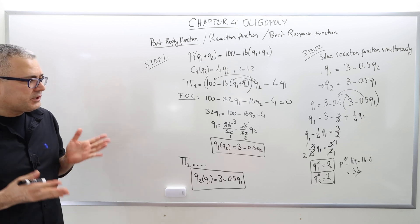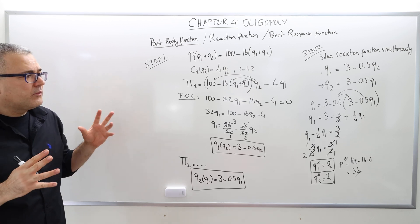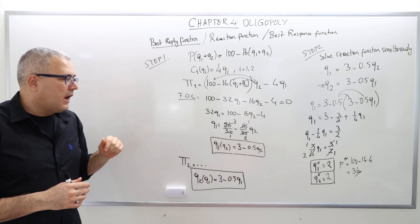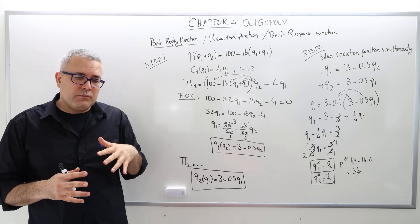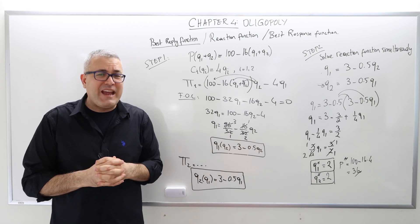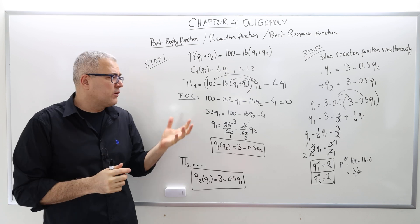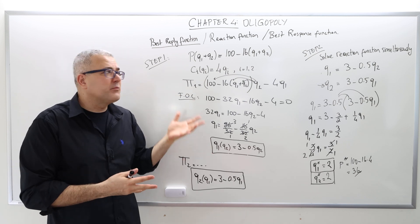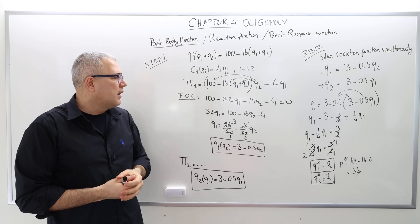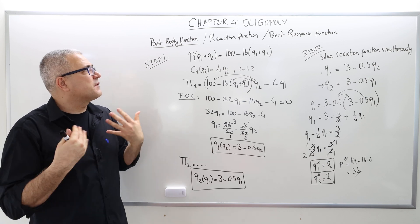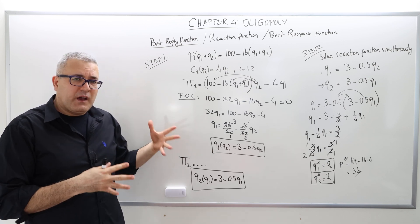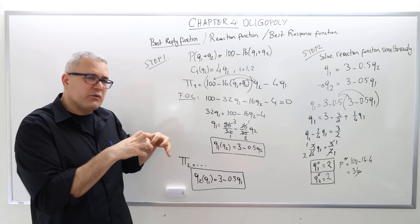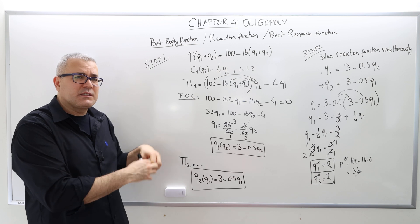Here is the explanation for why in the Cournot model we solve the reaction functions simultaneously. This solution is called Nash equilibrium, which was originally suggested by Cournot itself. Cournot was a French mathematician who provided that solution way before Nash. The Nash and Cournot solutions actually coincide in this problem.